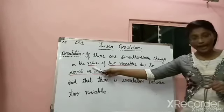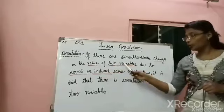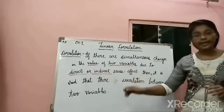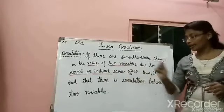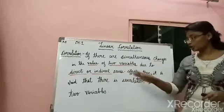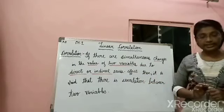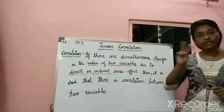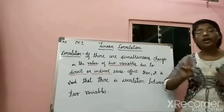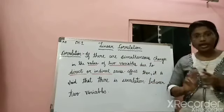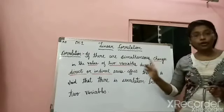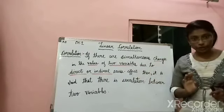So any changes in the value of two variables directly or indirectly as cause or effect — then it is said there is a correlation between the two variables. I hope that is clear.